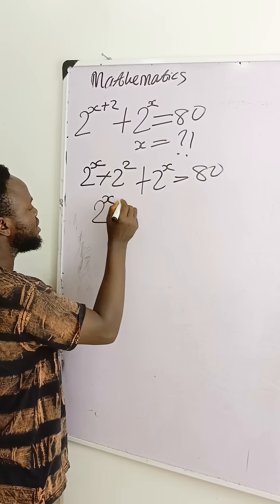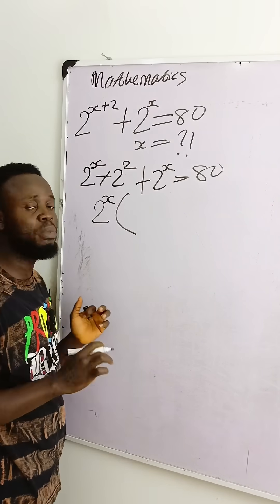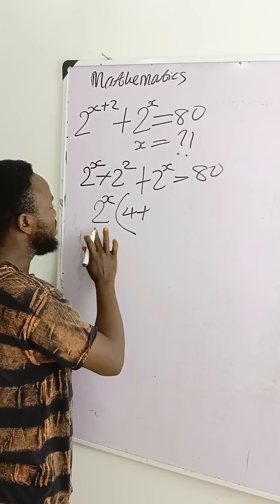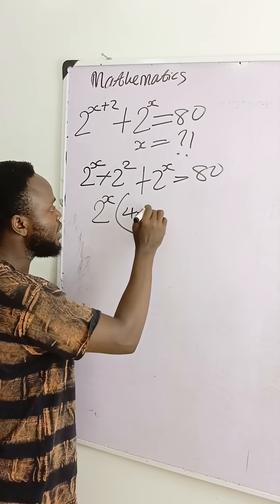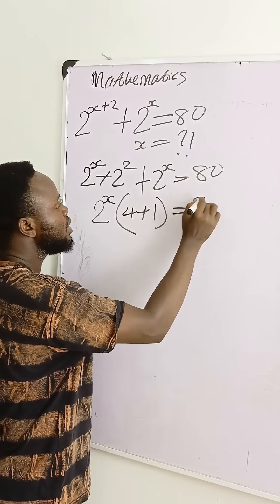Let's factorize 2 power x. Bring it out here remaining 2 power 2, which is equal to what? 4. This divide this one gives you 1. You have 1 here is equal to what? 80.